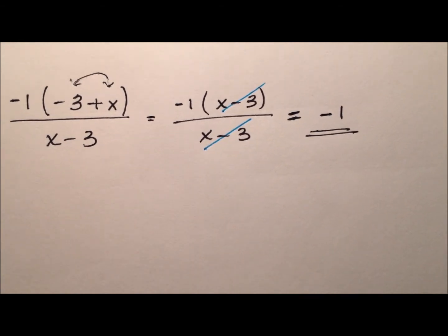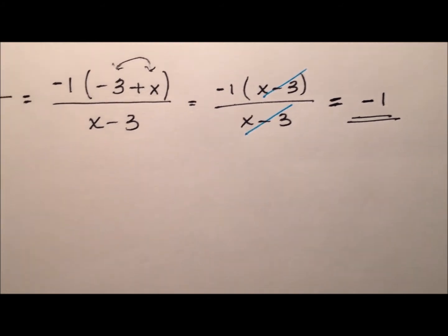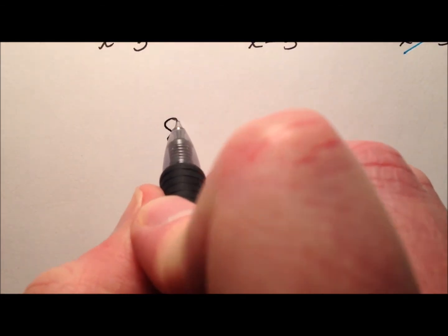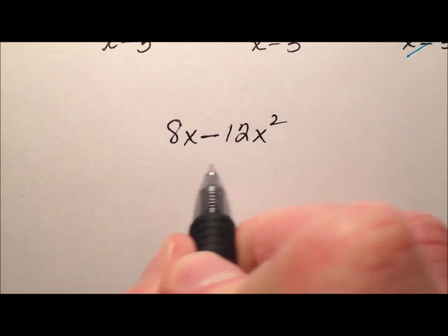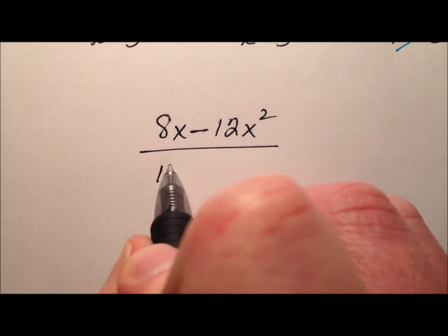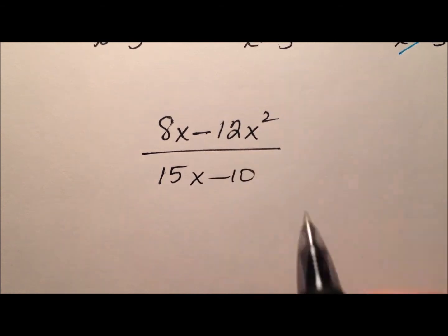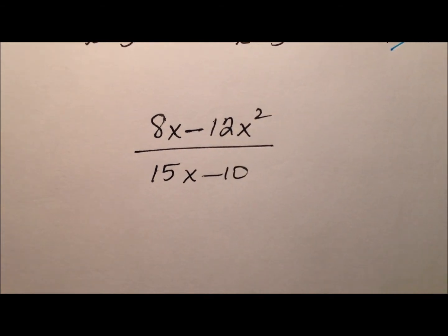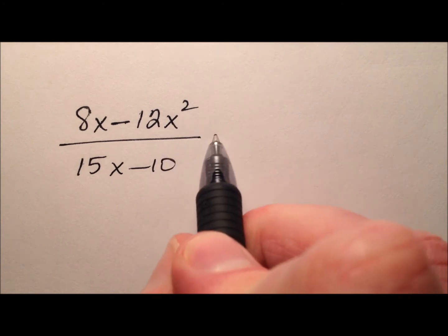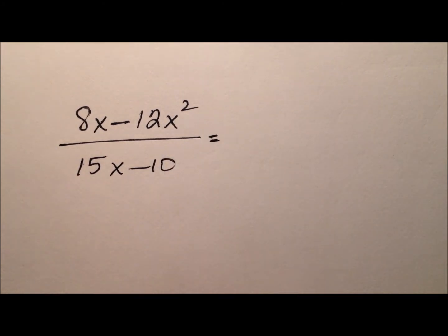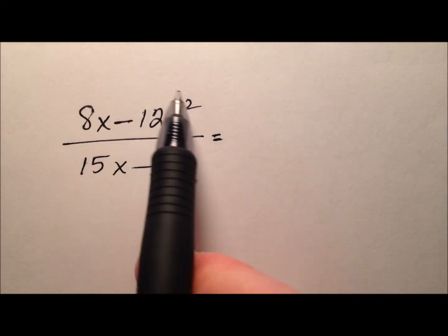Well, let's look at an example of what this could look like inside a larger structure. So let's say we have something like 8x minus 12x squared and that's being divided by 15x minus 10. It looks like I can take greatest common factors out of the numerator and out of the denominator. So let's go ahead and do that from the numerator first.